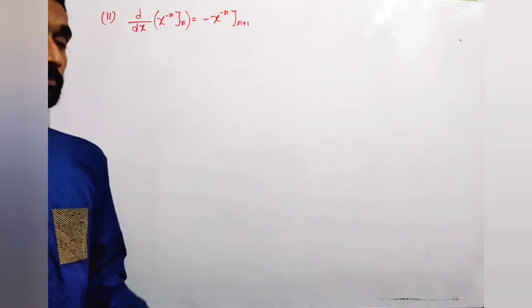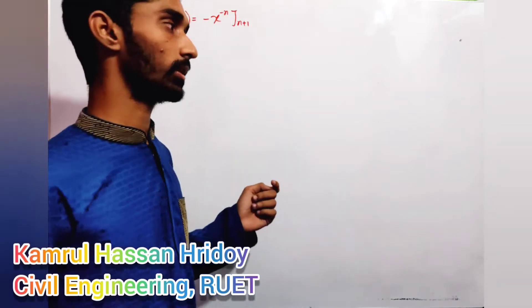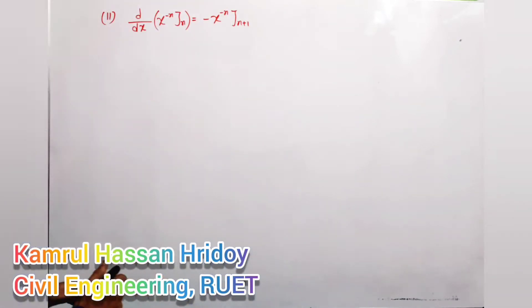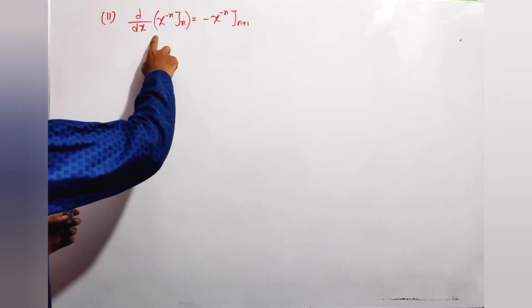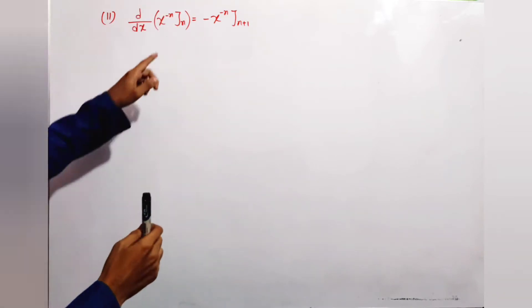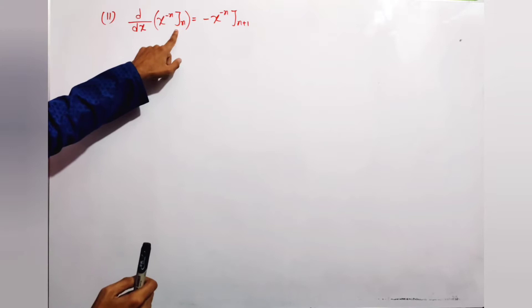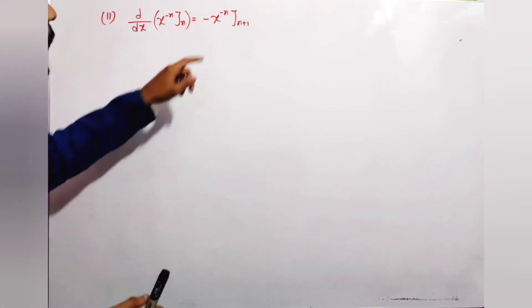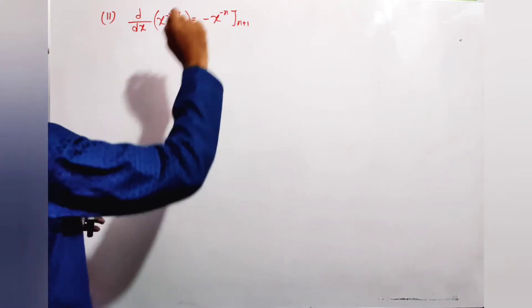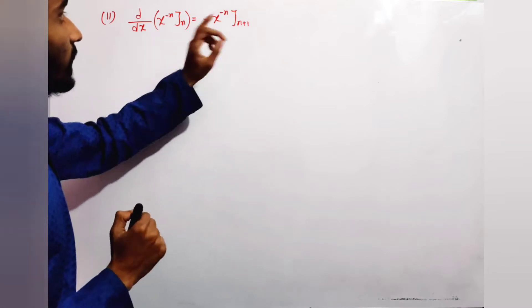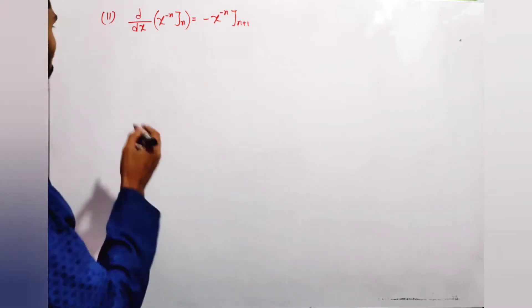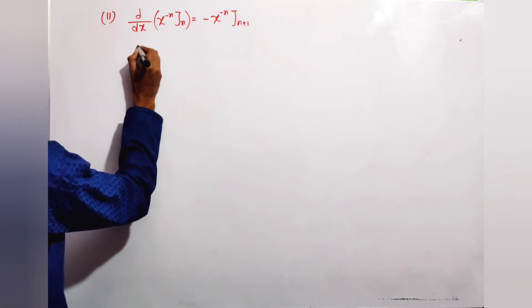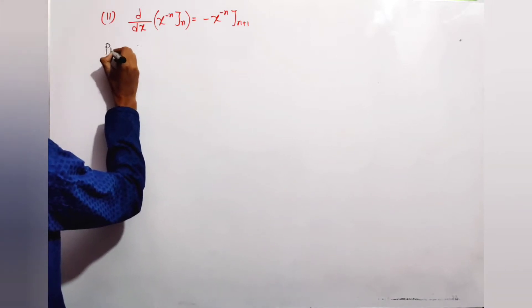Assalamu alaikum. I am going to prove Bessel's function recurrence formula number 2. The formula is: d/dx [x^(-n) · J_n] = -x^(-n) · J_{n+1}. I am going to show you the proof.